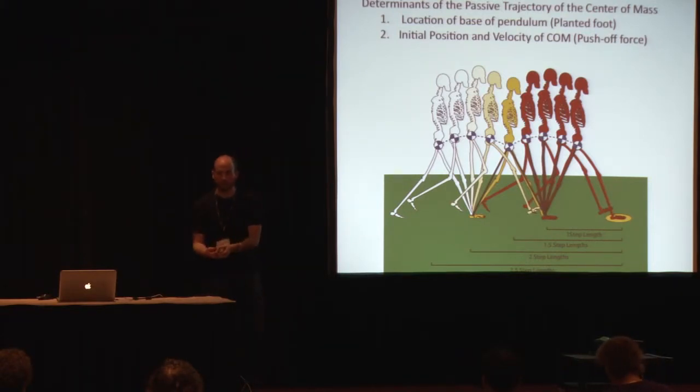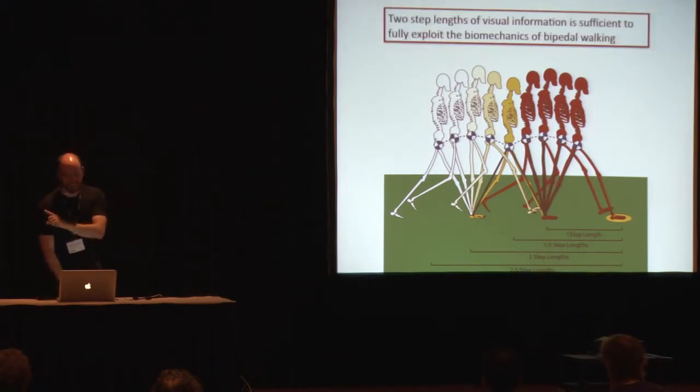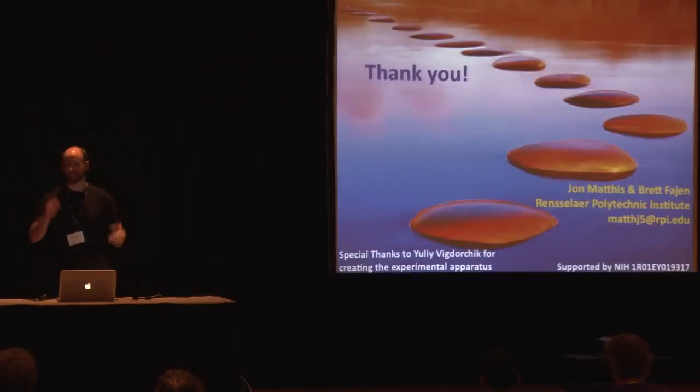You can shift the location of that planking foot to adjust the base of that pendulum, and you can tailor the push off force at the end of the double support phase in order to tailor the initial conditions of your center of mass relative to that planking foot. This is the last line, and this is the take home message here, which is that as long as you have two or more step lengths of visual information about your upcoming path, you have all of the information that you need to maximally, fully exploit the basic biomechanical forces that are inherent to bipedal walking, in order to approximate the level of efficiency that you can walk with in a flat, obstacle-free environment. Thank you.